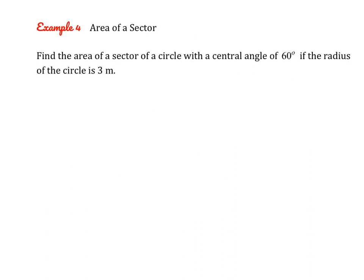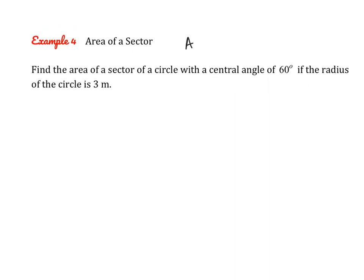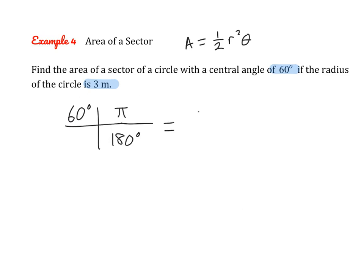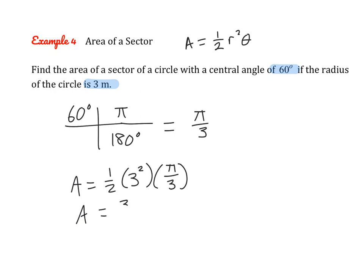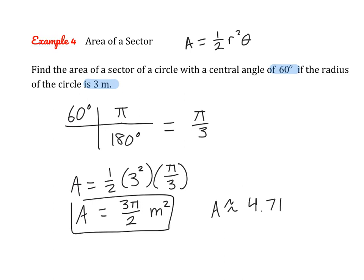Now let's try an area of a sector problem. The formula is one-half times radius squared times theta. Find the area of a sector whose central angle is 60 degrees and whose radius is 3 meters. First convert 60 degrees to radians: degrees on the bottom, pi radians on top, giving pi over 3 radians. Then area equals one-half times 3 squared times pi over 3, which gives an exact answer of 3 pi over 2 meters squared, or approximately 4.71 meters squared.